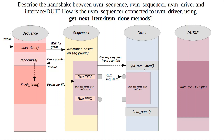get_next_item is the call that the driver makes, which is again a blocking call. Once the FIFO has a request sequence item available, this call gets unblocked and you send the information on to the DUT — essentially toggling the DUT pins with the request sequence item values. Once that's done, call item_done. Here you send back the response item and push it into the response sequence item FIFO of the sequencer.